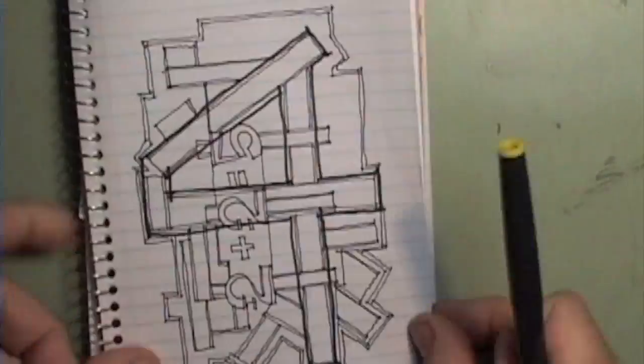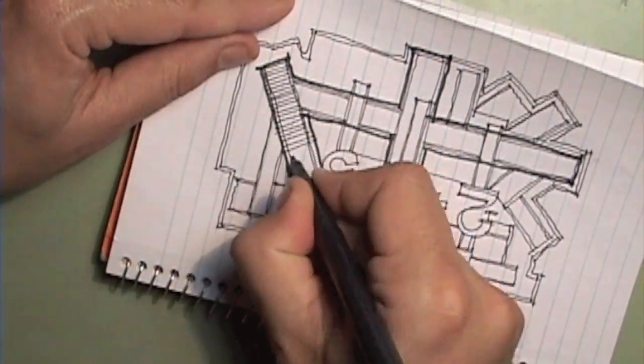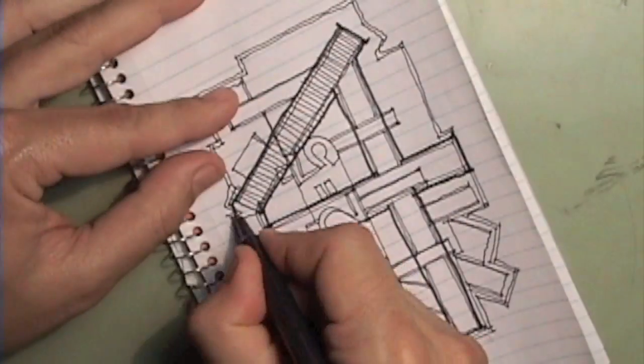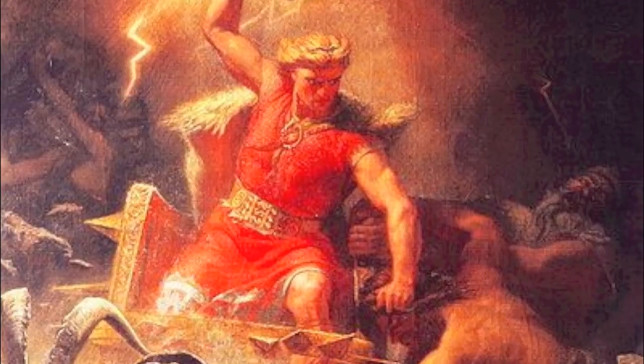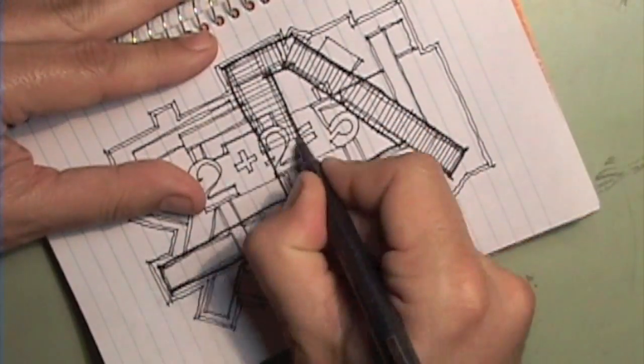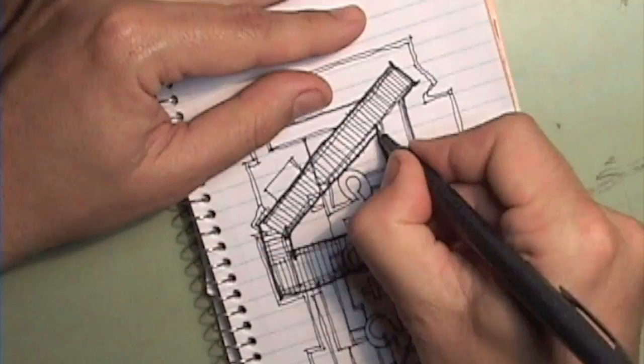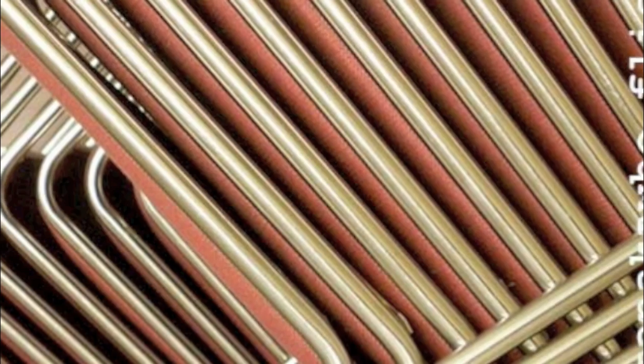The architecture student studies these things not because they'll always be doing the calculations, but because they need to understand the principles behind the calculations. They do this because their design decisions depend on their understanding of the natural world, physics, and materials.